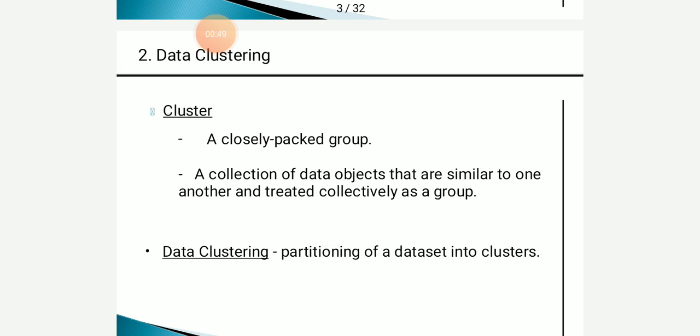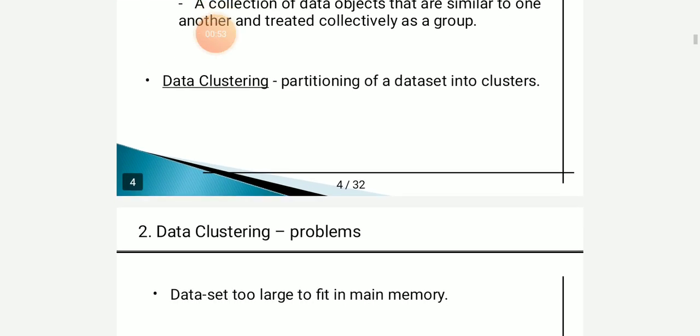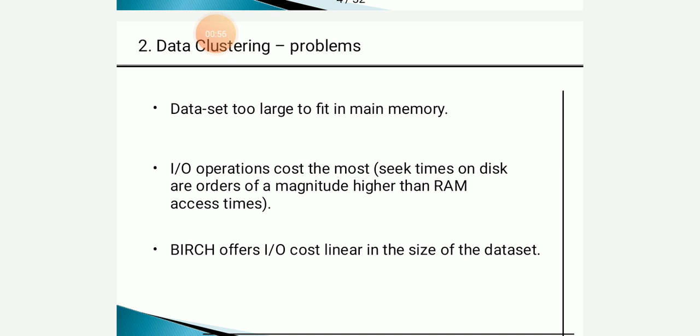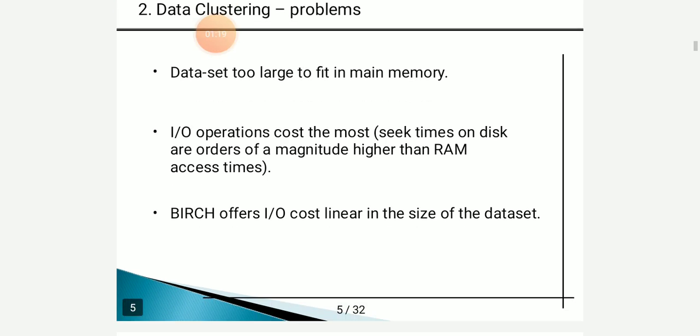Data clustering involves the partitioning of a data set into clusters. There are two problems arising when we perform data clustering. First, the data set is too large to fit in the main memory. Second is IO operation cost — the seek time on disk is orders of magnitude higher than RAM access time. The main advantage of the BIRCH algorithm resides in the reduction of this IO cost, which is linear in the size of the data set.